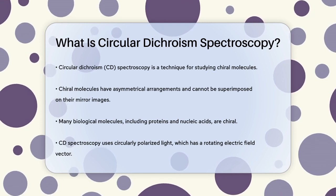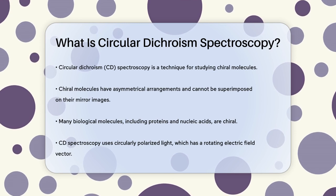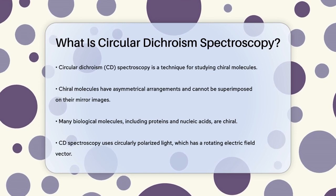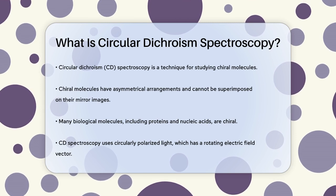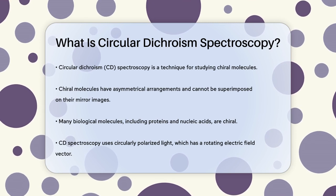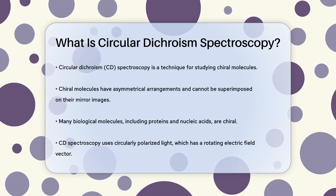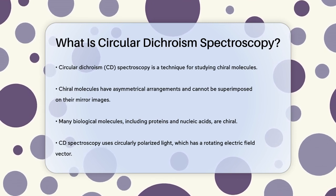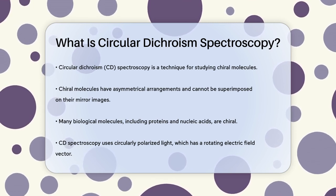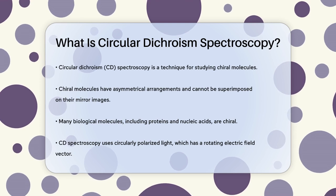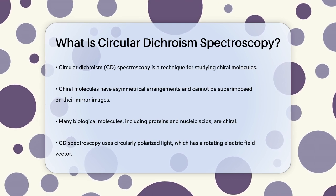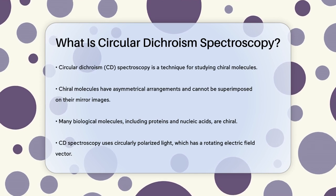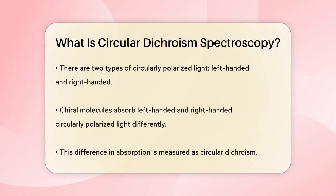Circular dichroism, or CD, is a technique used to study the structural characteristics of chiral molecules. Chiral molecules have an asymmetrical arrangement of atoms, meaning they can't be superimposed on their mirror image. Many biological molecules like proteins, nucleic acids, and some small organic molecules are chiral.